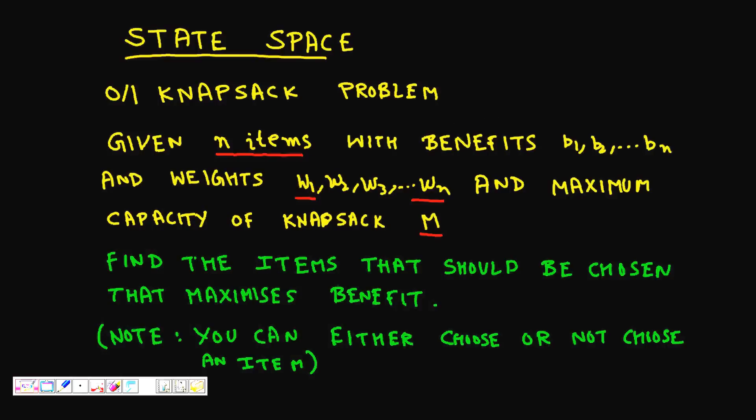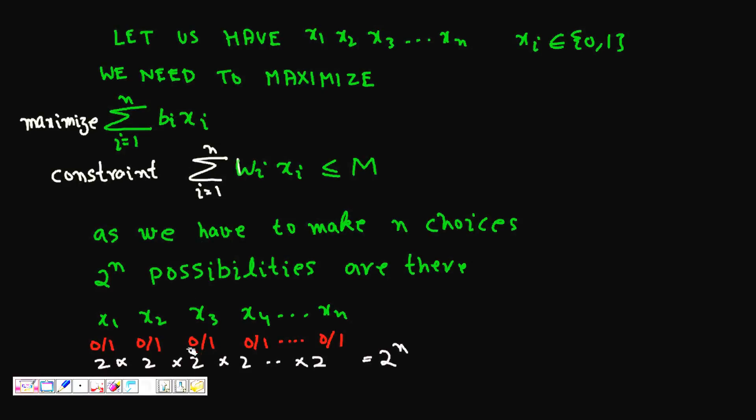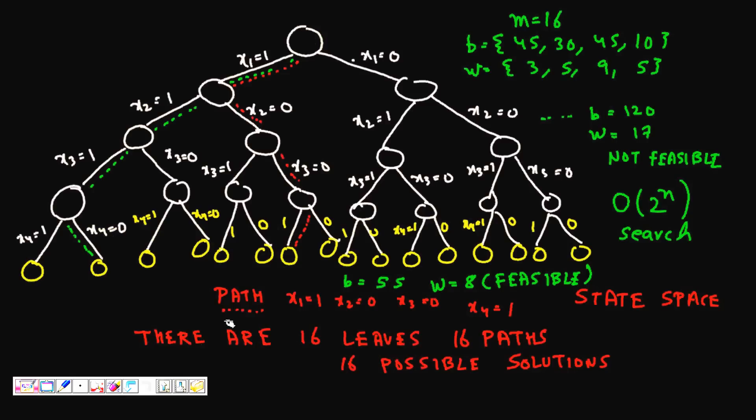For example, let's say we have four items. Item one has weight 3, item two has weight 5, item three has weight 9, item four has weight 5. The benefits are 45 dollars for the first one, for the second it's 30, for the third one it's 45, and the fourth one is 10. The maximum weight of your knapsack, the capacity, is 16.